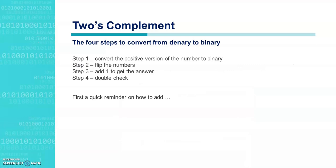There are four steps when you convert from denary to two's complement binary. Step one: forget about the fact it's negative, and just convert the positive version of the number into binary as normal. Step two: flip the numbers. Step three: add one, and that gives you the actual answer. Step four: double check that answer.